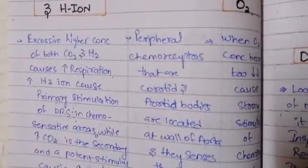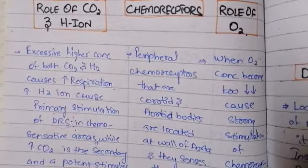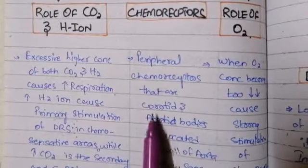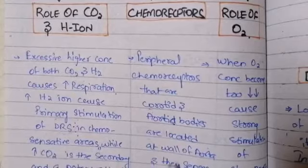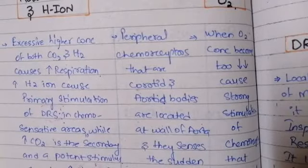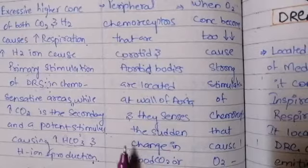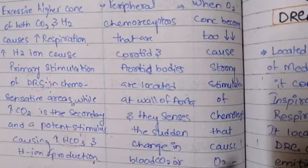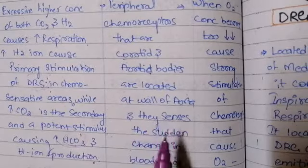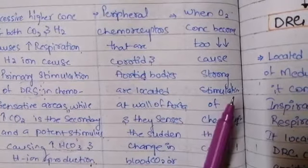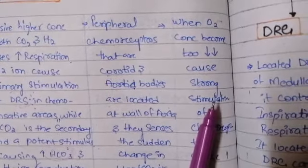The second mechanism is the chemoreceptors — specifically the peripheral chemoreceptors: the carotid and aortic bodies. These are located at the bifurcation of the common carotid arteries and the aorta. They sense sudden changes in blood carbon dioxide or hydrogen levels. When there is a change in carbon dioxide or hydrogen concentration, the chemoreceptors sense it and pass signals via the vagus and glossopharyngeal nerves to the respiratory centers of the neural mechanism, thereby controlling respiratory regulation.